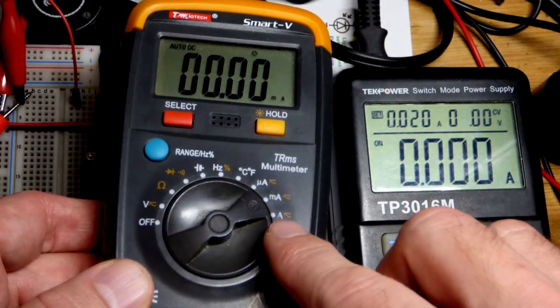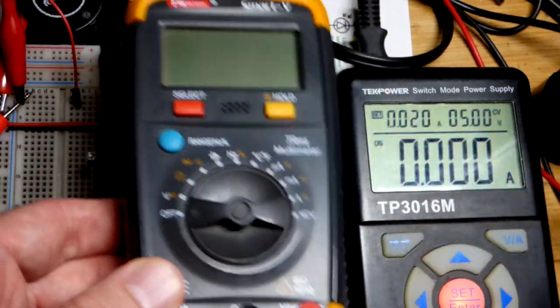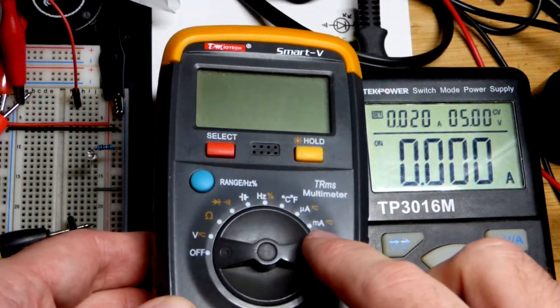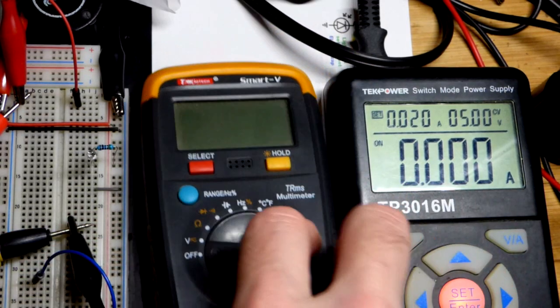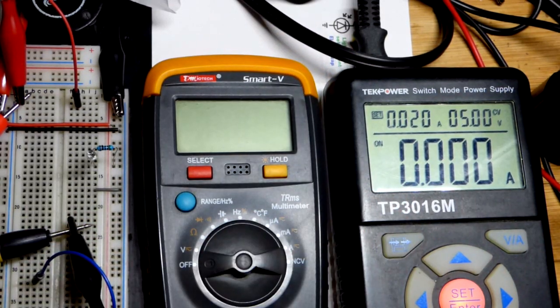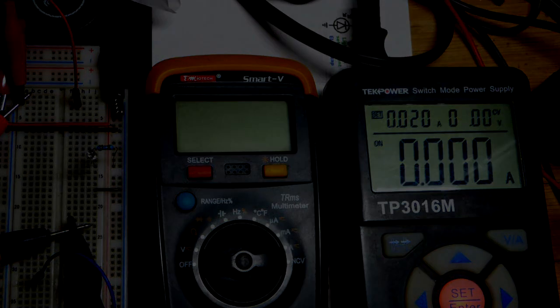But in any case, main takeaway is turn off your meter or get it off of measuring current. At least if it has a power button, still put it on voltage so the next time you go to measure voltage, you don't have it at the current setting and you blow a fuse.